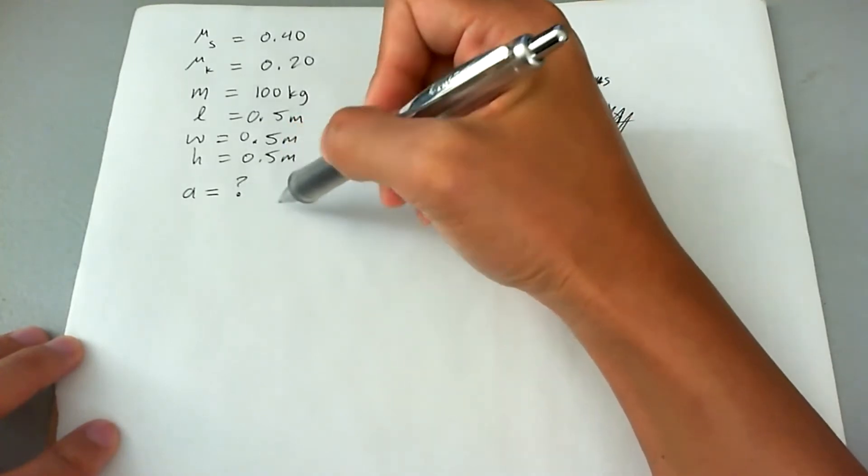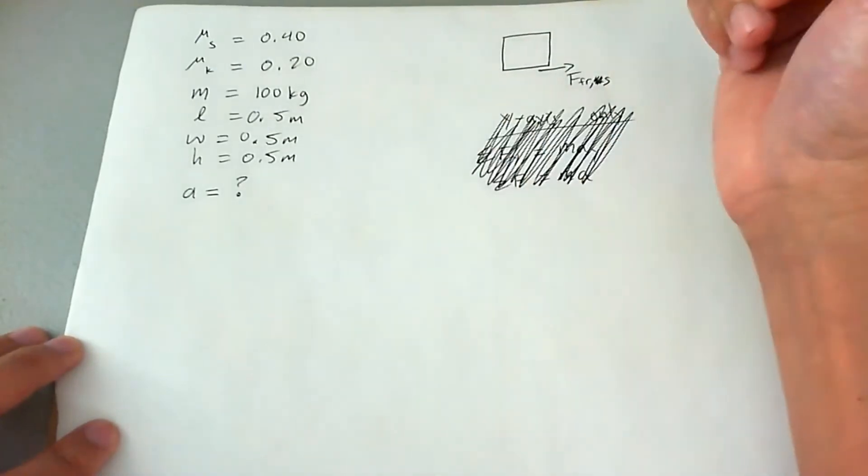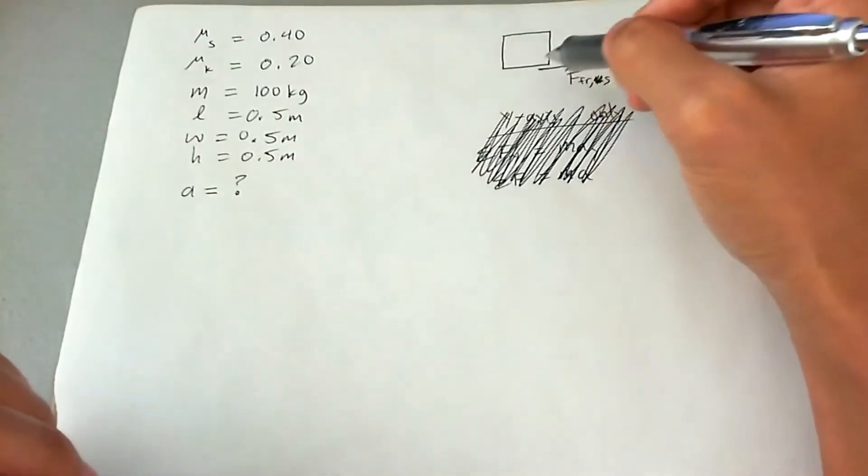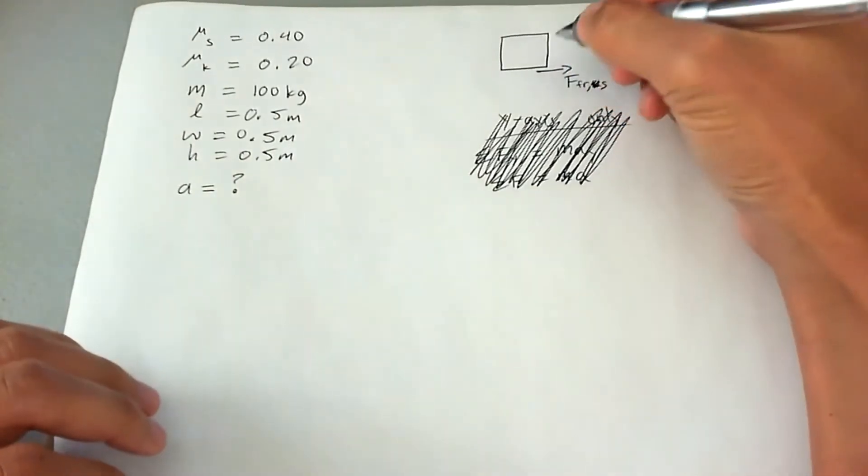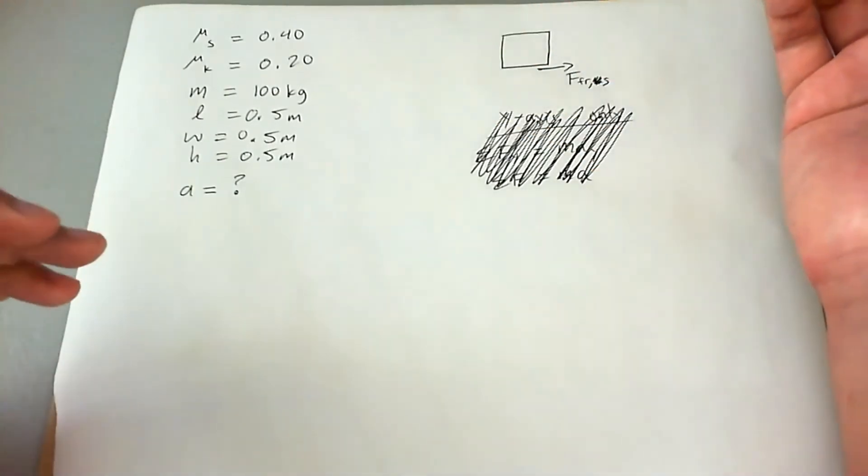What we're trying to find is the acceleration of the truck before the box starts to slip. So let's look at the reality of the situation. We're going to be doing a Newton's second law analysis on this box, and the box is the prime subject. So we really don't care about the truck.